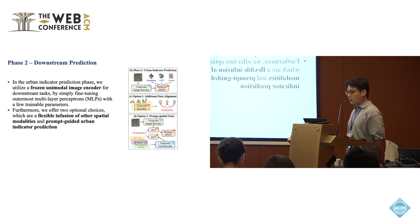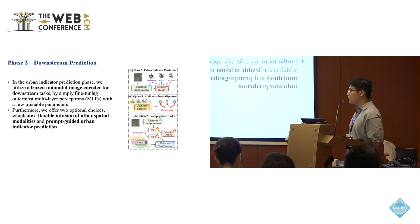We offer two more option choices for future works. The first option is that you can include some other modalities, probably trajectory or road network structure. Another option we can try in the near future is the prompt-guided urban indicator prediction.